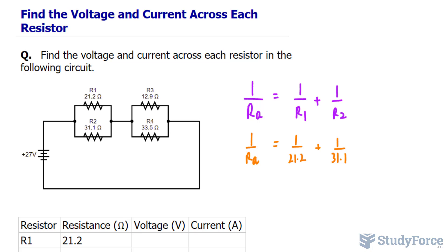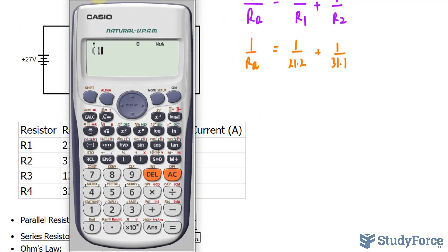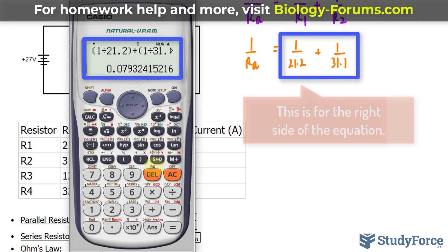From here, I'll use my calculator to find out RA. So I take 1 divided by 21.2, and notice that I place them in parentheses. Each fraction is placed in their own parentheses, plus 1 over 31.1. Your calculator should end up giving you a value that's like this, 0.0793.